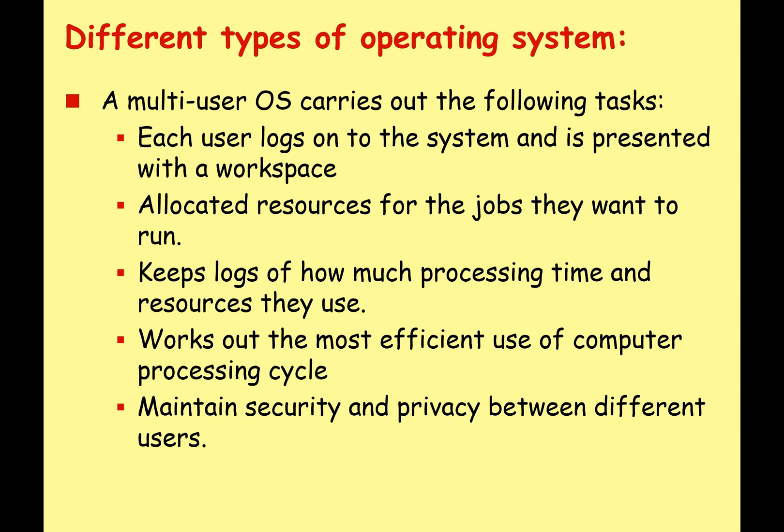A multi-user operating system carries out the following tasks: each user can log on and is presented with a workspace; the OS allocates resources for the jobs they want to run; it keeps logs of how much processing time and resources they use; it works out the most efficient use of the computer processing cycle; and it maintains security and privacy between different users. This is critical — you don't want other people looking at your data just because they're using the system at the same time.